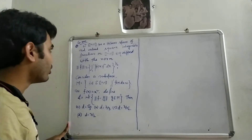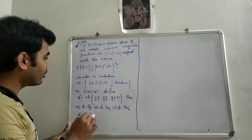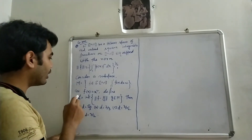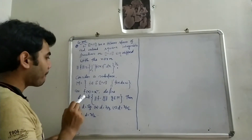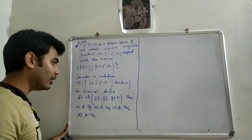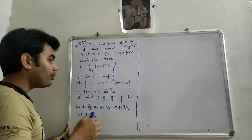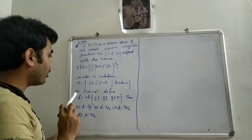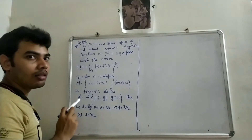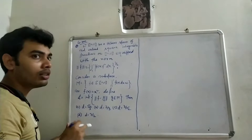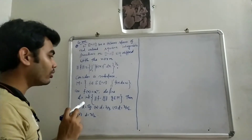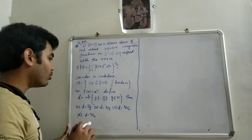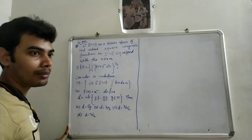For f(x) = x², define d = inf{ ‖f - g‖ : g ∈ M }. We have to find the value of d. That means we have to find the distance from the function f(x) to the subspace M, which is the length of the projection of f(x) onto M⊥.